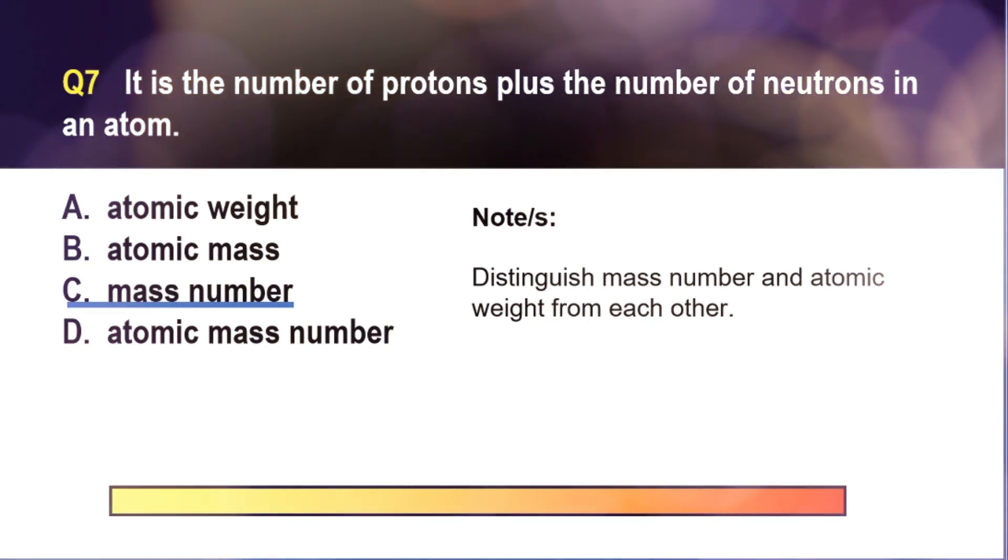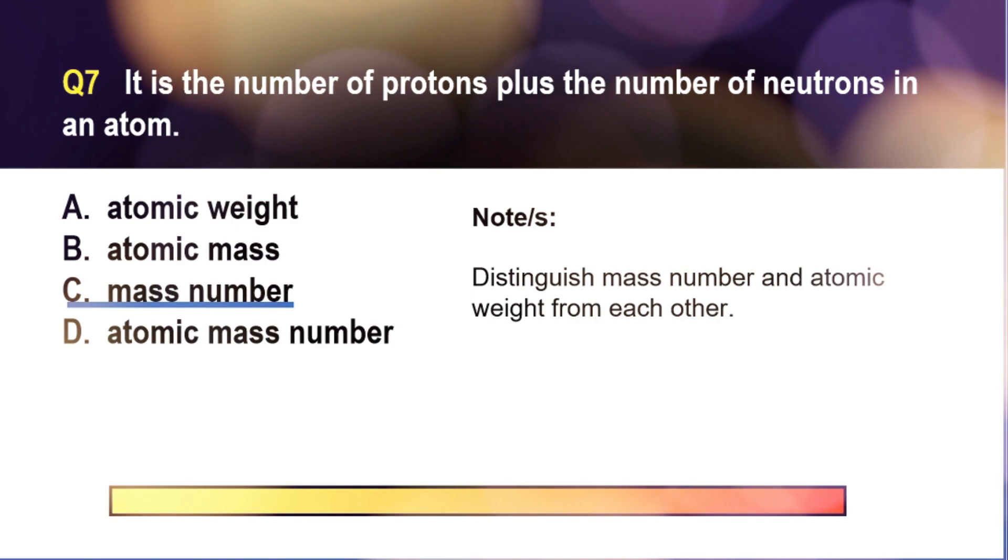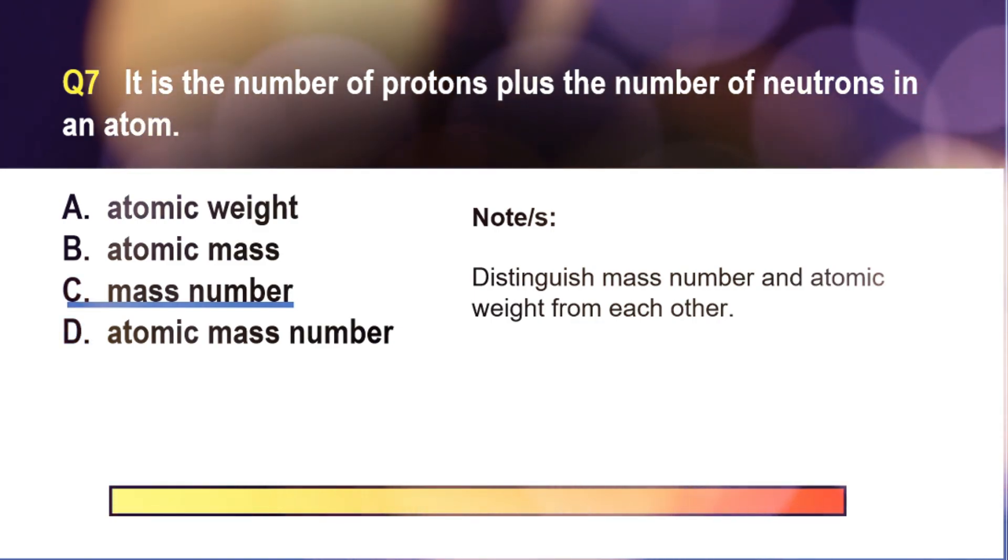The atomic mass or the atomic weight is the average number of protons and neutrons for all natural isotopes of an element. It is a decimal number. For letter A and B, from my understanding, atomic mass and atomic weight refer to the same thing.